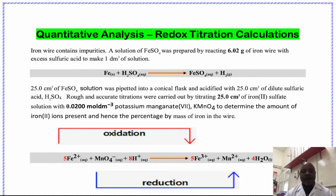This video is about a quantitative analysis to determine the percentage of iron and the impurities present in an iron wire. A solution of iron(II) sulfate was prepared by reacting 6.02 grams of iron wire with excess sulfuric acid to make 1 dm³ of solution.